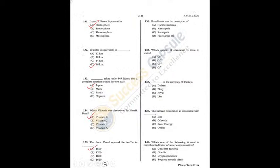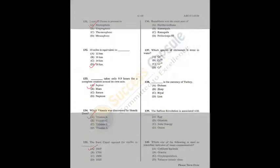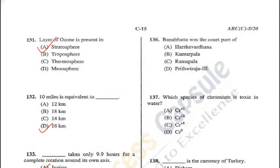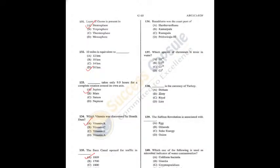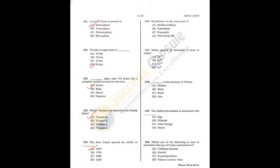Question 136: Banabhatta was the court poet of Harsha Vardhan — A is the correct answer. He is famous for his biography of Harsha called Harshacharita. Question 137: Which species of chromium is toxic in water? The answer is B — trivalent chromium.